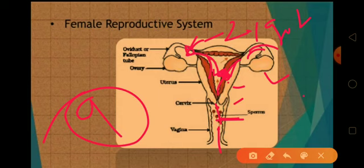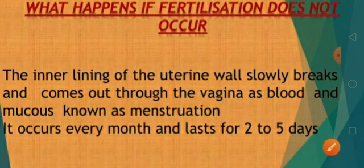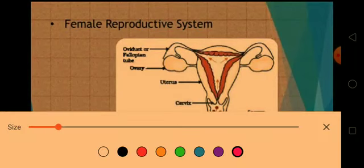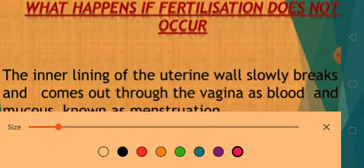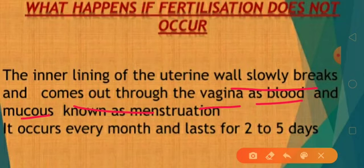Now, what happens if fertilization does not occur? The inner lining of the uterus — you can see it here — slowly comes out through the vagina as blood and mucus. When blood and mucus come from the vagina, it is known as menstruation. It occurs every month and lasts for two to five days, when fertilization does not occur.